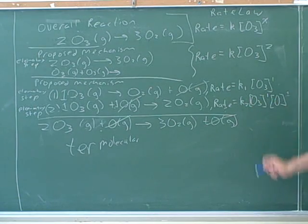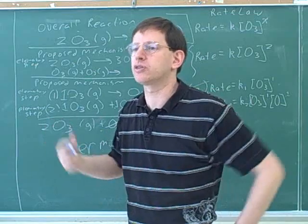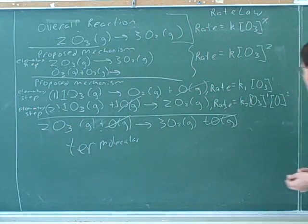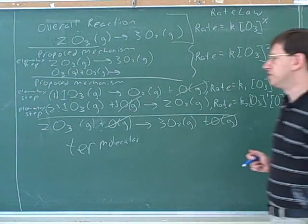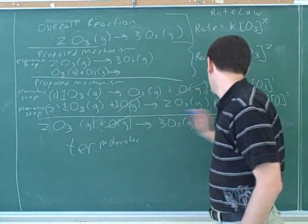And what's the overall order of this step? 2. Because then you add the exponents. So there's different questions you can be asked about order. You can be asked about the order of a particular species, or the overall order. So you have to read the question carefully to make sure that you're answering the right question. This is unimolecular in ozone, unimolecular in oxygen atom, but it's bimolecular overall.